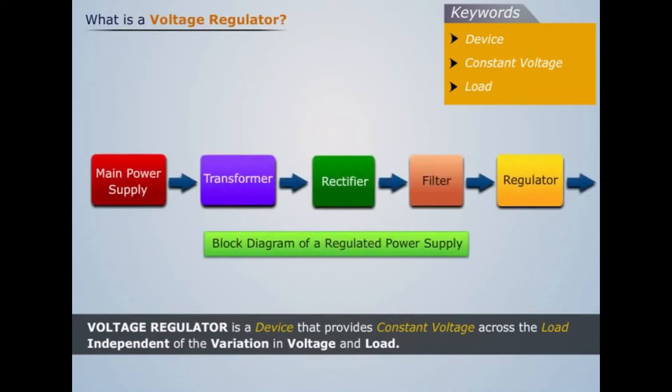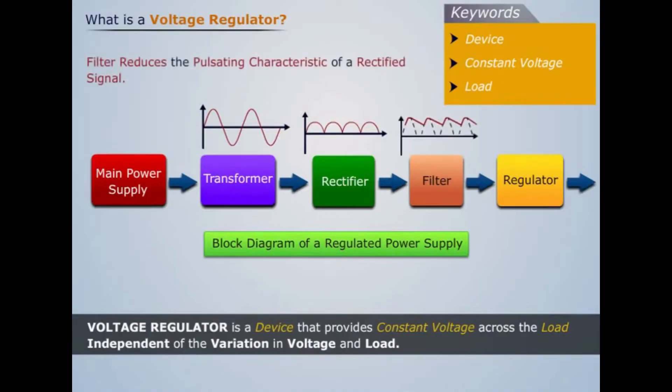The block diagram of a regulated power supply is as shown. Here, the transformer steps down the input AC voltage. Rectifier converts the AC signal to pulsating DC signal. Filter reduces the pulsating characteristic of a rectified signal. And the IC regulator maintains the constant output voltage across the load, irrespective of the variation in input AC voltage or load.